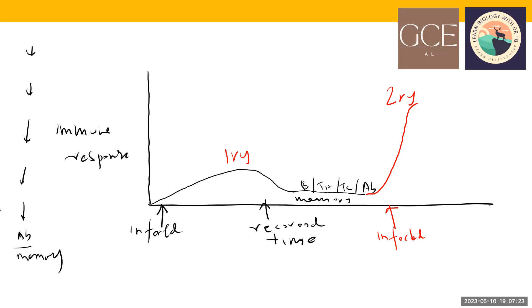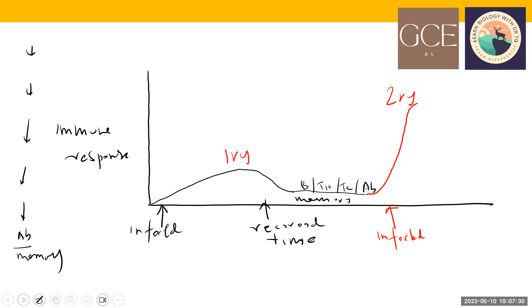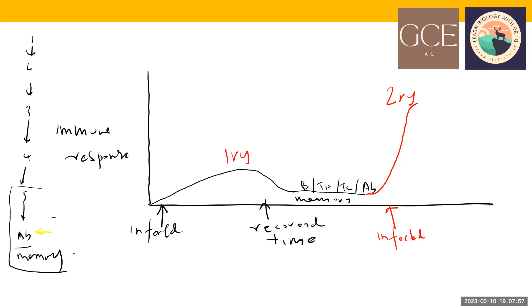In types of immunity, we'll learn not just the whole process but also how protection can be made at different levels. For example, rather than going through every step from the first line of defense, we can also provide immunity at the level of antibodies directly — such as by injecting antibody against a specific antigen into a person. That is a kind of immunity.